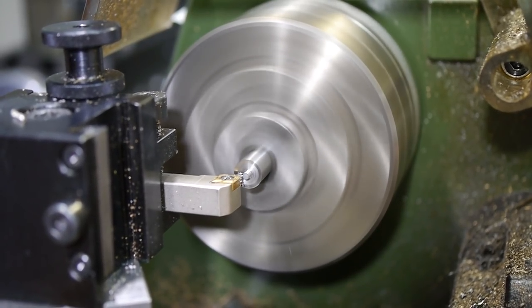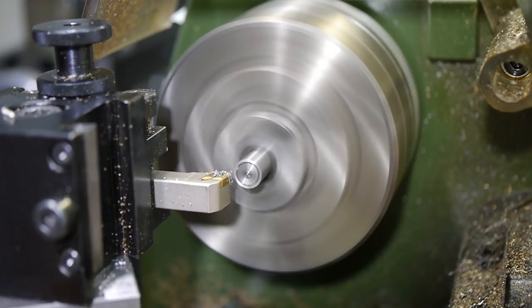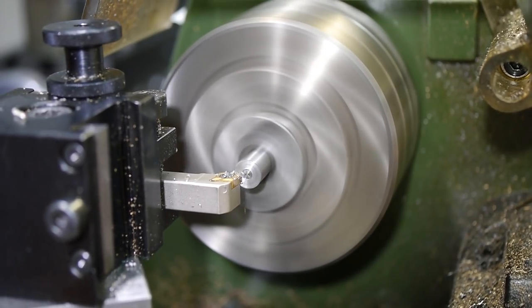I switched to a small radius insert for the bearing mount, so it was easier to make sure the inside corner was tight enough to seat the bearing securely.